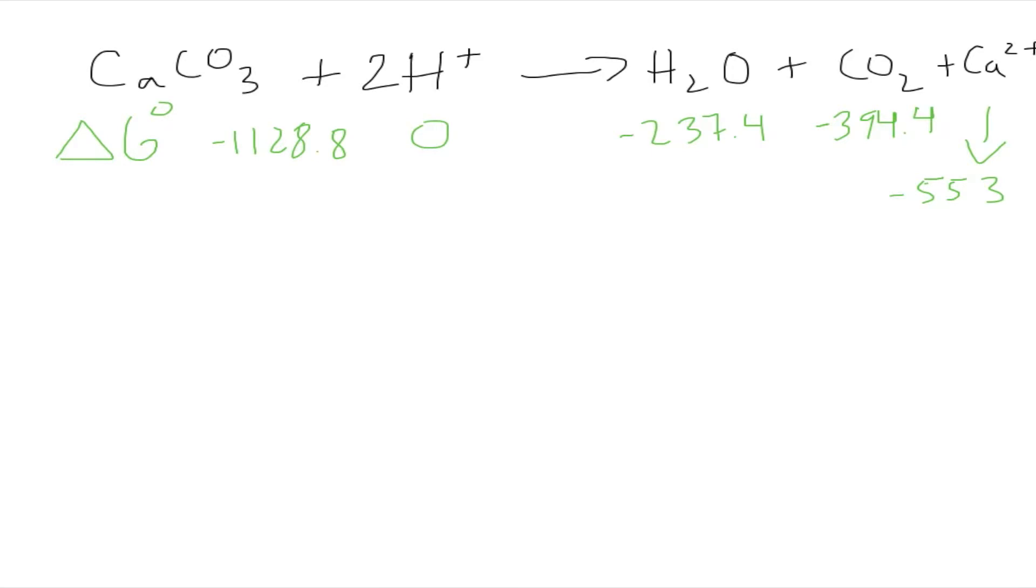Delta G for the reaction is going to be—we always start with the products. I'm going to open brackets just to show the difference between products and reactants. It's one mole of water times negative 237.4. All of this is in kilojoules per mole, but because there's not much space, I'll write the units at the end.